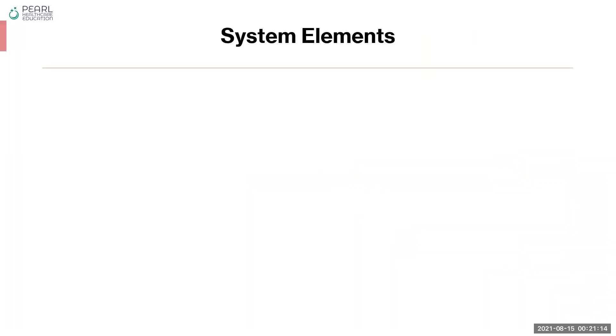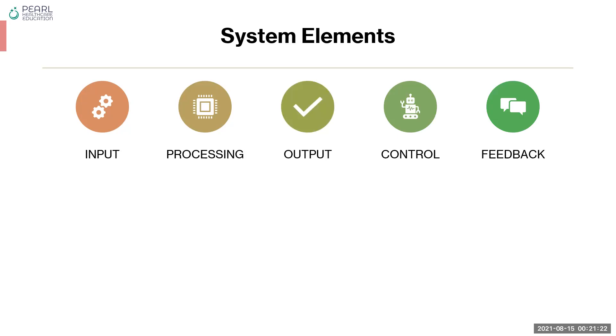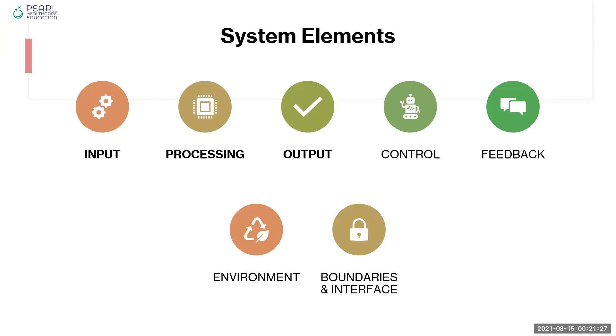There are various elements of a system and these include input, process or processing, output, control, feedback, environment and boundaries. Input, process, and output are the most important or most common elements of a system, and everything else is also very important but it helps maintain the three functions of the system: what do you input into the system, what processes take place, and what is taken out of the system.